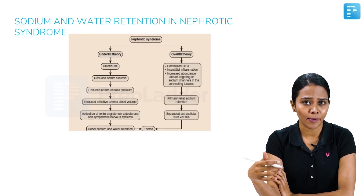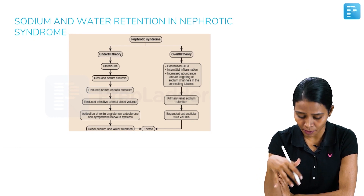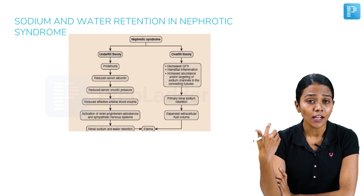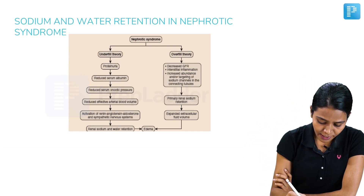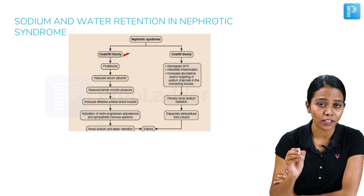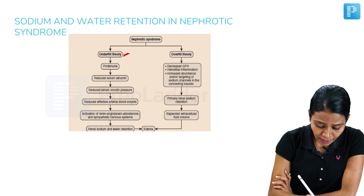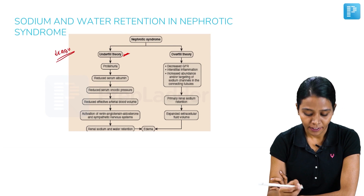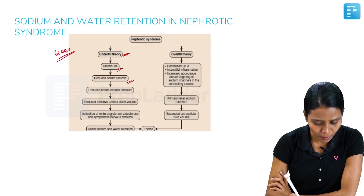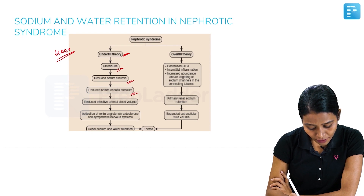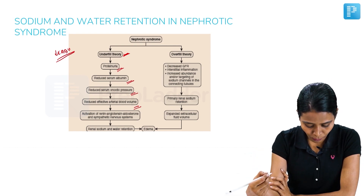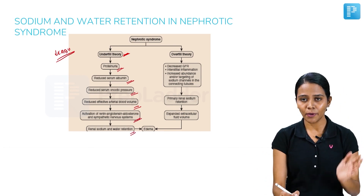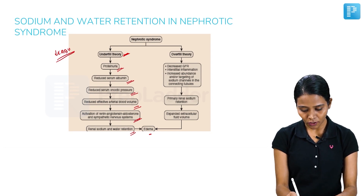The next mechanism of water retention is in nephrotic syndrome — the third important cause. There are two important theories. The first is the underfill theory: whenever there is proteinuria, there is reduced serum albumin, so oncotic pressure decreases, which further reduces the effective arterial blood volume. This activates the renin-angiotensin-aldosterone system and causes renal sodium and water retention, finally leading to edema.